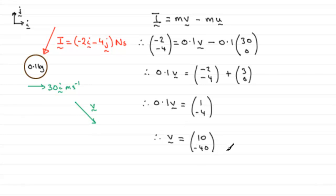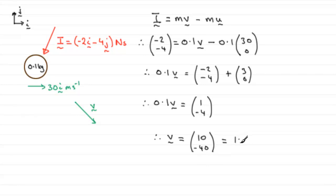If they asked us to work out the speed, which sometimes they do, all you've got to do is work out the magnitude of that velocity vector, which would be the square root of 10 squared plus 40 squared. You could leave it as a column vector, or return it back to 10i minus 40j, and that would be in meters per second. That's basically how we would do a problem like that.